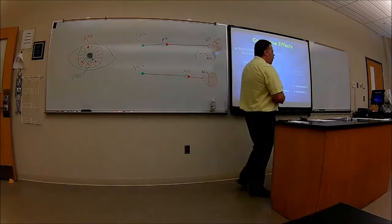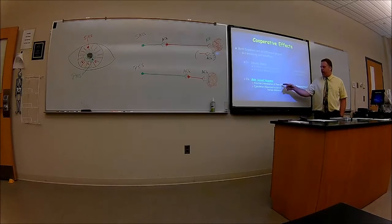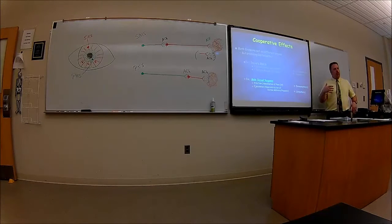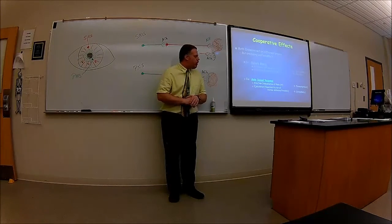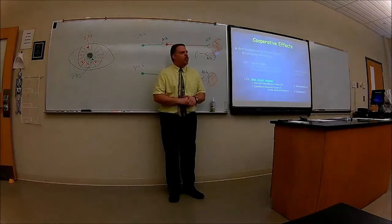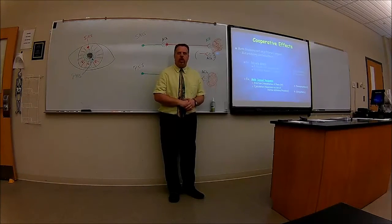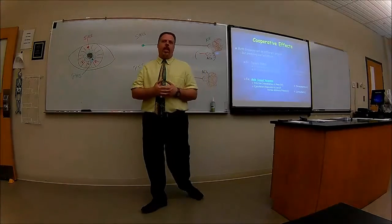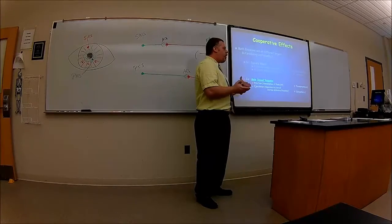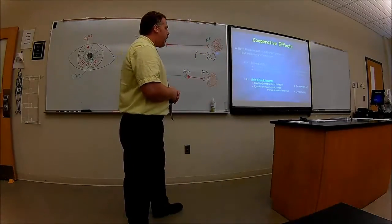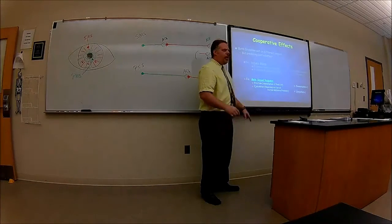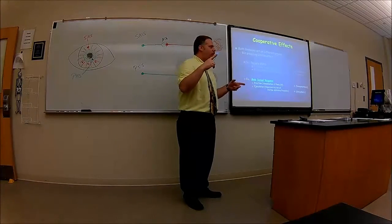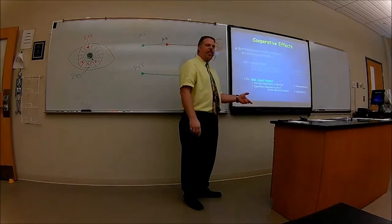The male sexual response is another cooperative example. Erection occurs through vasodilation of blood vessels in the penis, caused by the parasympathetics — more blood fills the vessels, causing erection. Ejaculation is caused by vasoconstriction of the ductus deferens — the vas deferens — and that is sympathetics. My mnemonic: 'point and shoot' — point is parasympathetic erection, shoot is sympathetic ejaculation.